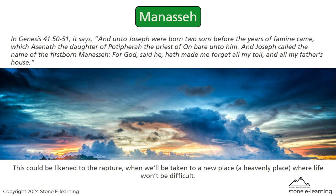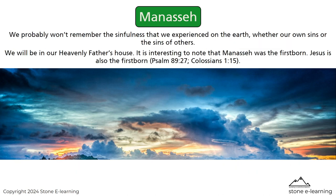In Genesis 41:50–51 it says: 'And unto Joseph were born two sons before the years of famine came, which Asenath, the daughter of Potipharah the priest of On, bare unto him. And Joseph called the name of the firstborn Manasseh, for God said he, have made me forget all my toil and all my father's house.' This could be likened to the rapture, when we'll be taken to a new heavenly place where life won't be difficult. We probably won't remember the sinfulness we experienced on the earth — whether our sins or the sins of others.